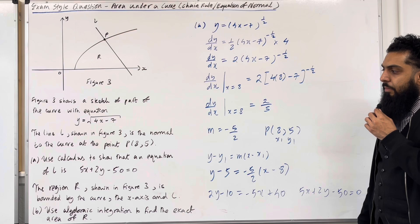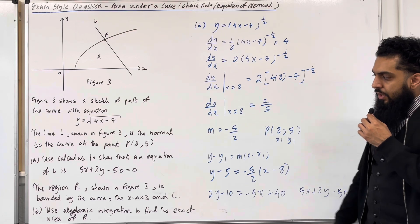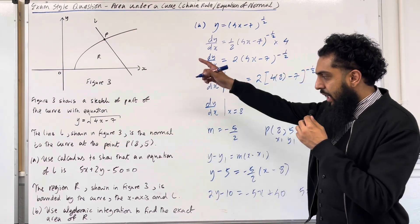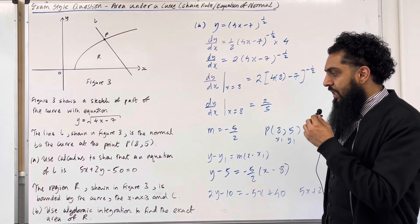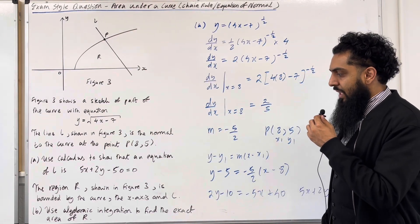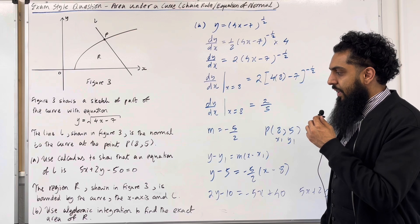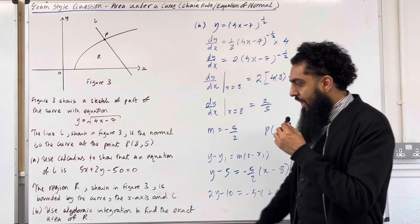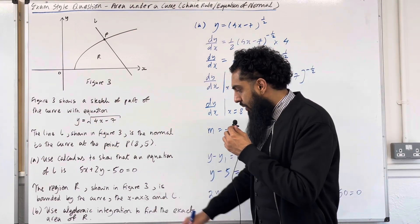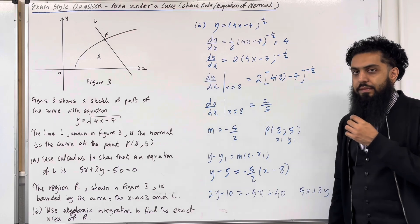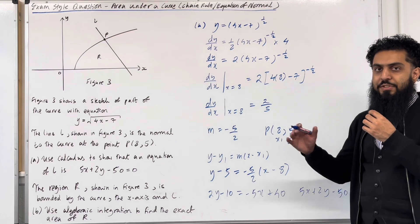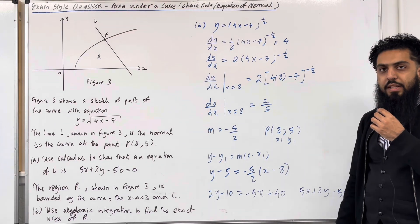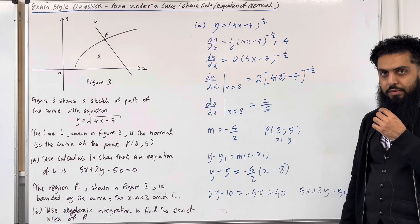Moving on to part B. The region R, shown in figure 3, is bounded by the curve, the x-axis, and L. Part B: use algebraic integration to find the exact area of R. Please pause the video, have a go at part B, and then play the video.